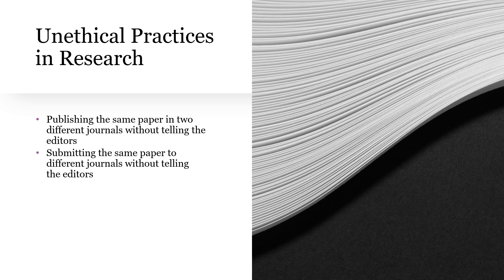Submitting the same paper to different journals simultaneously without telling the editors is another unethical practice. You may feel you can submit your paper to one journal and also to another, hoping it is accepted at one or rejected at the other. But if you wish to submit to another journal, you must first inform the editors of the first journal, revoke your paper, and only then send it to the other journal.